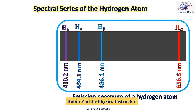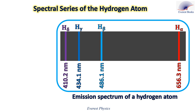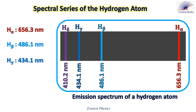As we have seen in the previous experiment, the emission spectrum of hydrogen gas in a gas discharge lamp shows a series of four spectral lines, or four colors, usually called alpha, beta, gamma, and delta. In air, the wavelengths of these lines are 656.3 nm for alpha, 486.1 nm for beta, 434.1 nm for gamma, and 410.2 nm for delta.